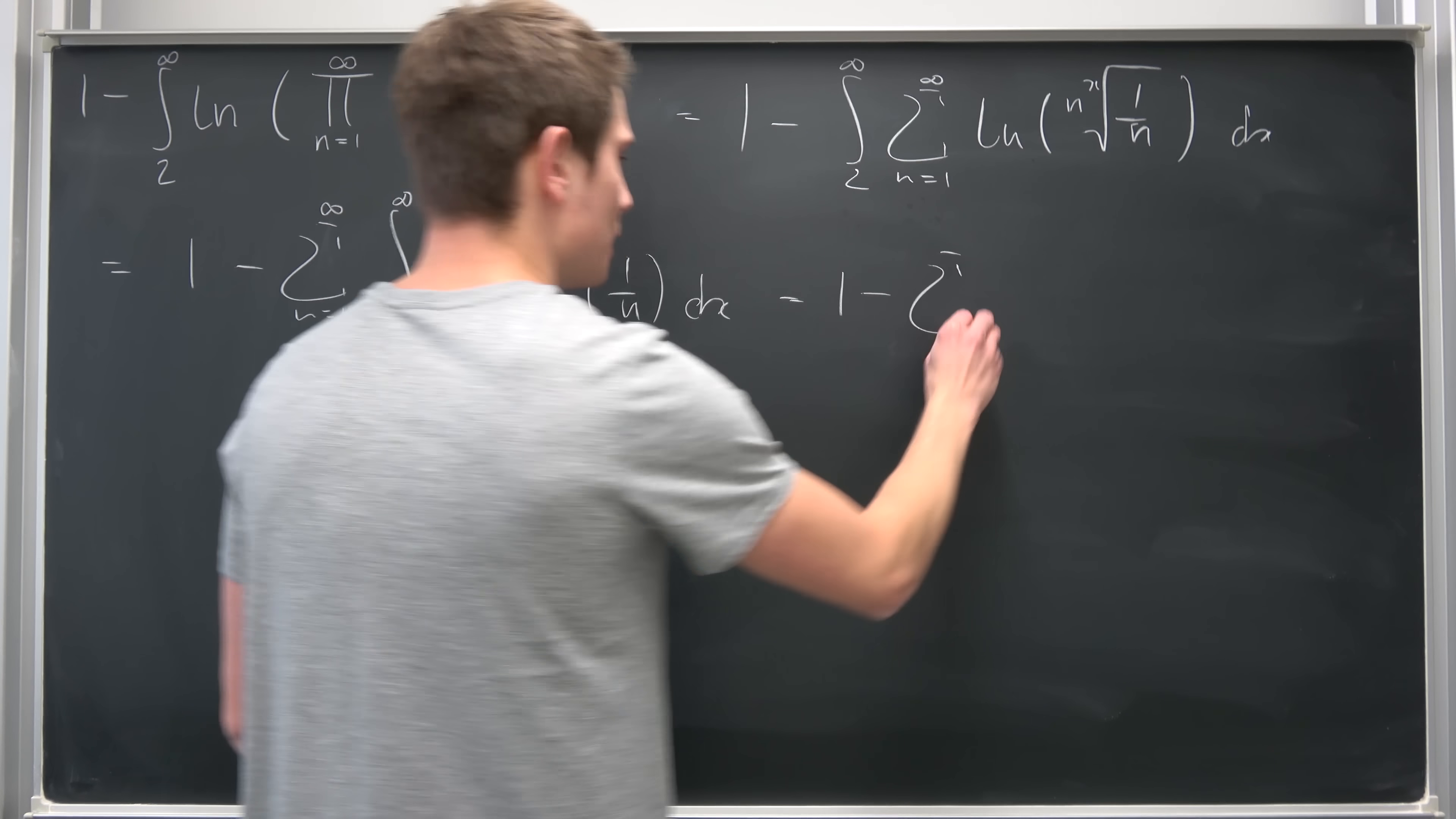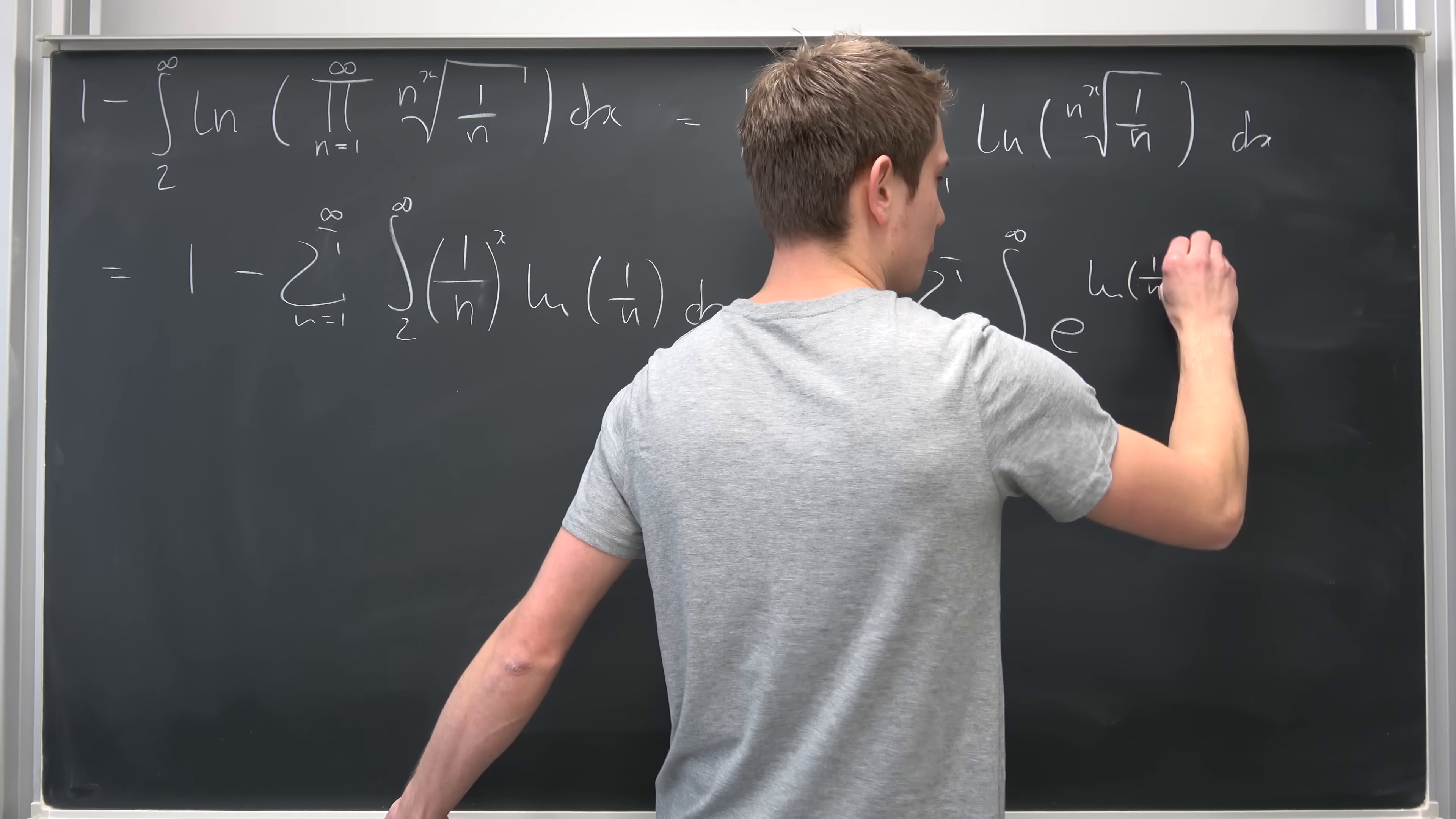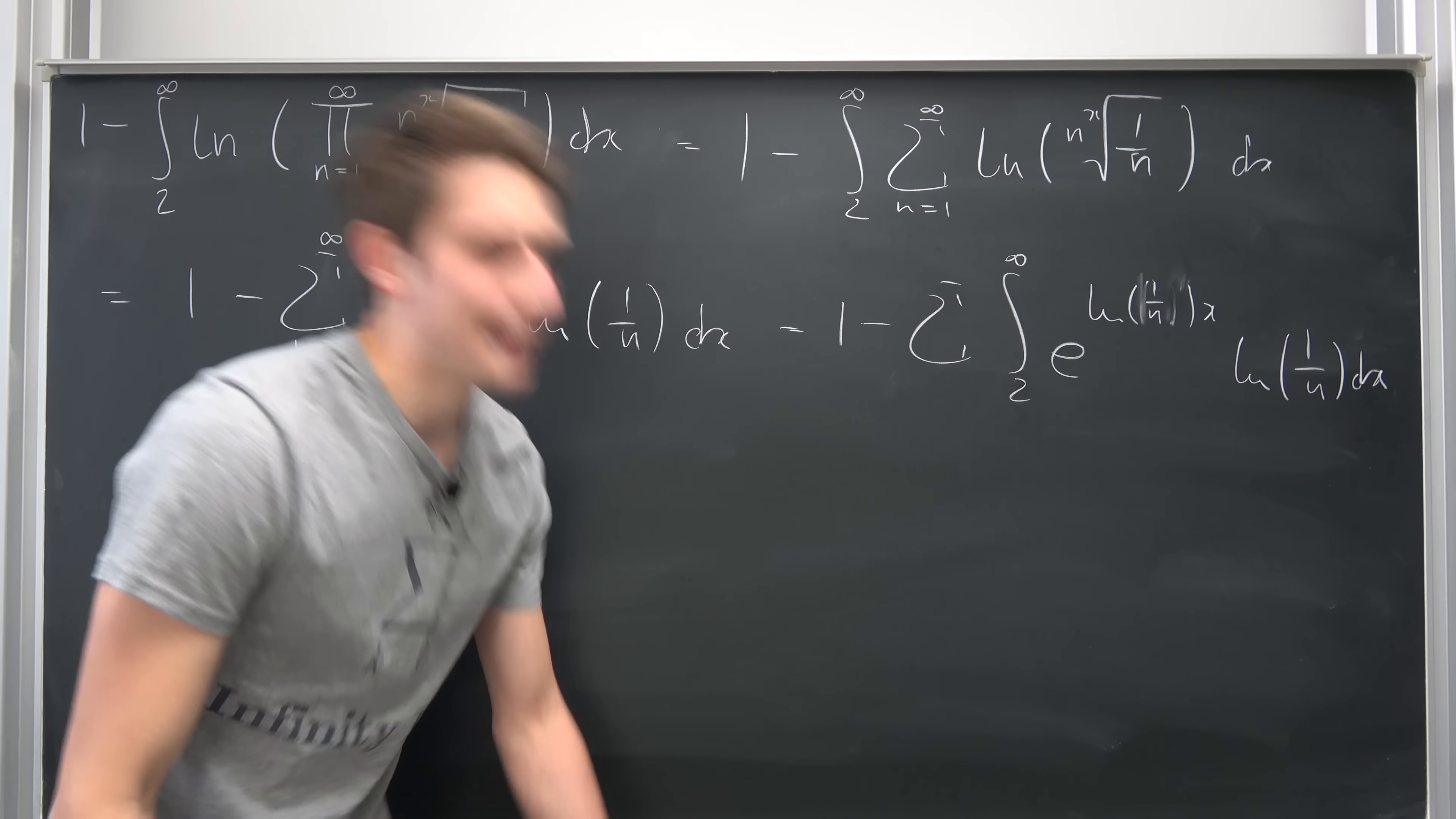Okay, so this is 1 minus this infinite summation. I'm going to leave the indices away, it doesn't matter. Integral from 2 to infinity of, and now we have e to the ln 1 over n to the x power. Okay, the x power completely to the outside. And the cool thing about logarithms is that we can take powers to the outside, so let's bring the power to the outside. Okay, times the natural log of 1 over n, integrated with respect to x.